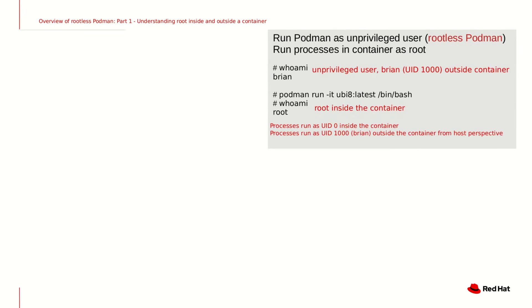If we start a container as an unprivileged user with rootless Podman, user namespaces are used. User namespaces are a feature in the Linux kernel that allow user accounts to be isolated in namespaces and allow for processes to have different UID and GID numbers inside and outside of the user namespace. User namespaces allow for processes to run as root within the container's namespace, but still be unprivileged outside of the container's user namespace. For example, the root user within the container's user namespace can kill other processes running in the container, but it doesn't have access to reboot the host because it's mapped back to an unprivileged user on the host that doesn't have access to do this.